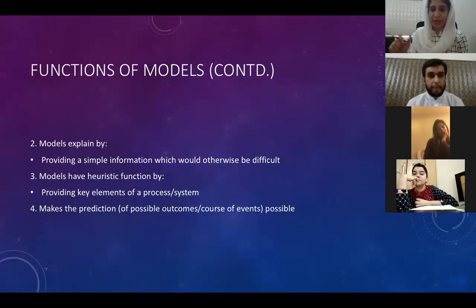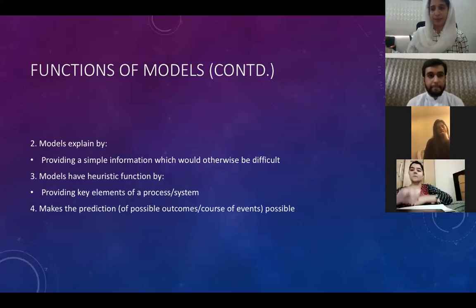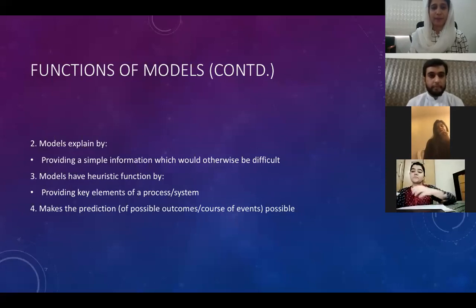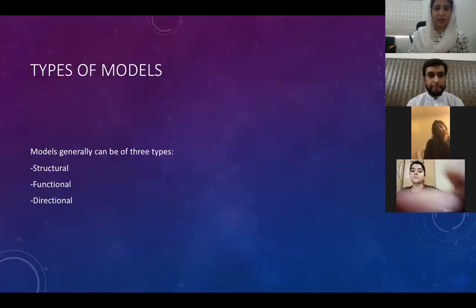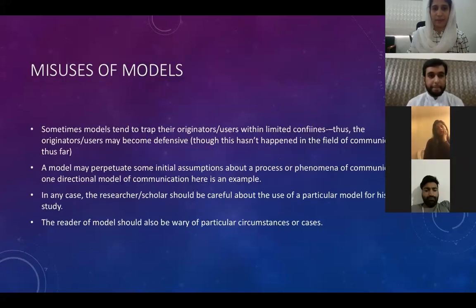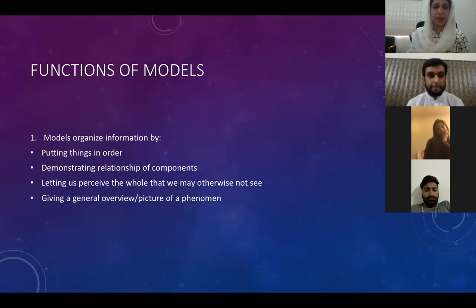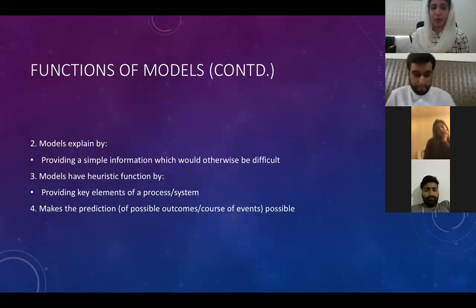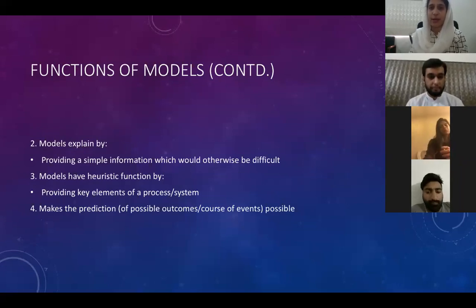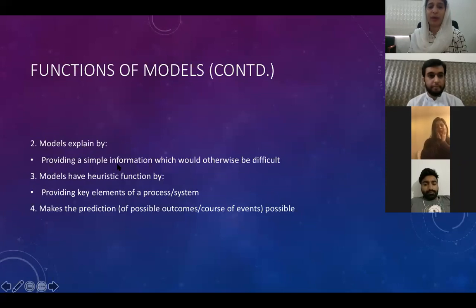Don't you think they not only put things in order, they also tell us the relationship? Like if two of the components in a triangle are added, you can get an answer for the third one. Let me go to my next slide. We're talking about functions of models. In the last slide, we learned that models put things in order for us — they organize pieces of information for us.